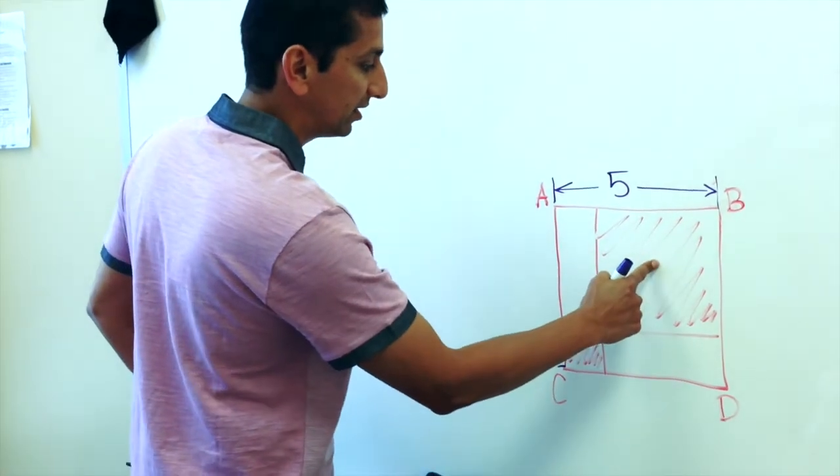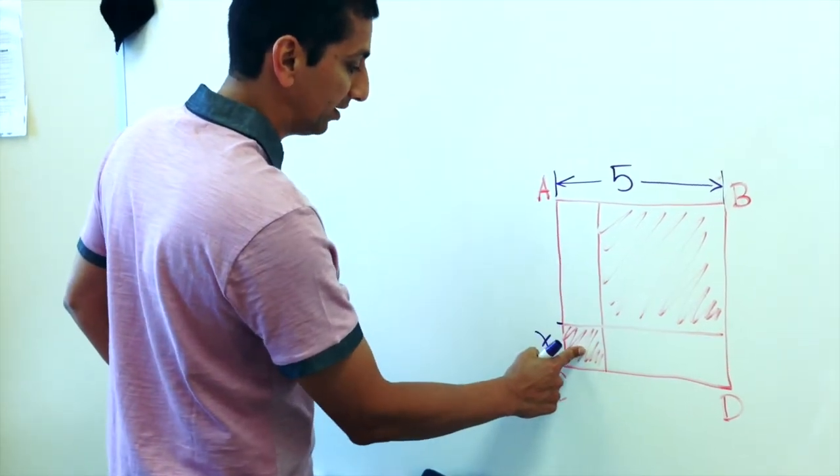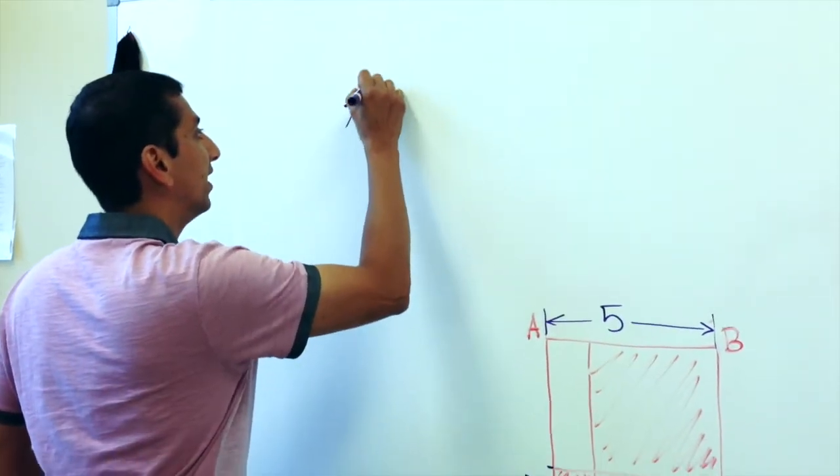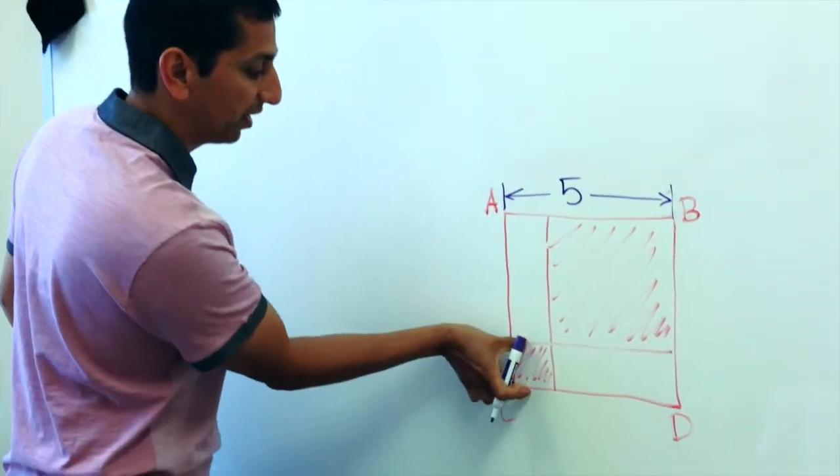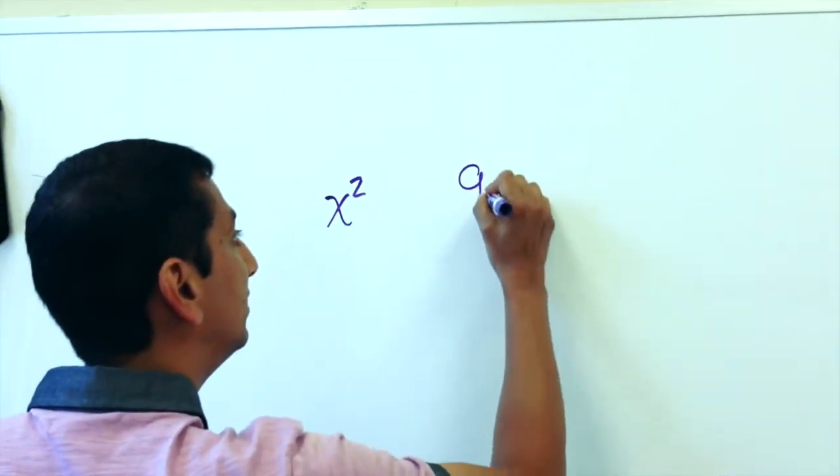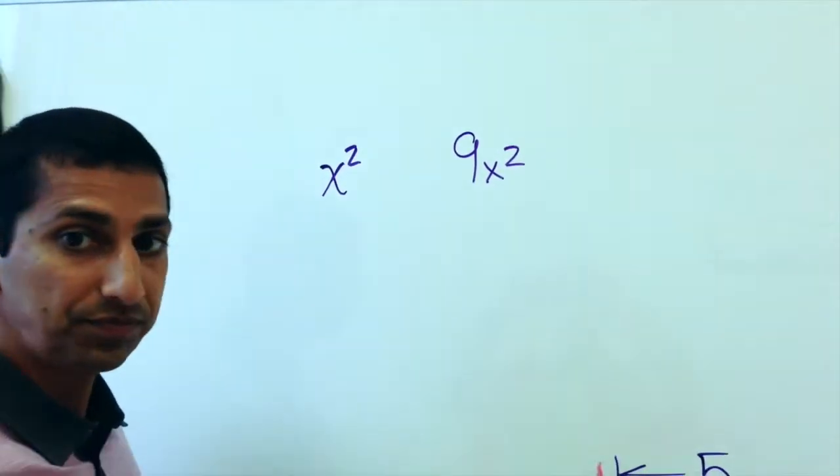So, I was told that this area is nine times that area. And I know the area of this. The area of that is simply X squared, since we know this is a square. And the area of this, then, is nine times that. So that's 9X squared.